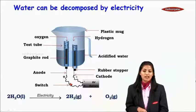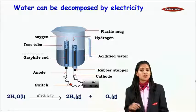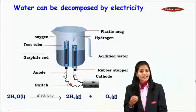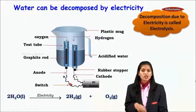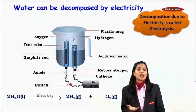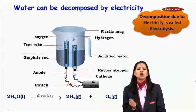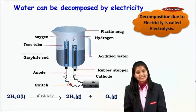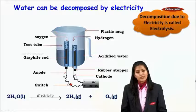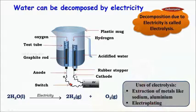The reaction needs to be balanced: 2H₂O → 2H₂ + O₂. Such a decomposition reaction that takes place due to electricity is called electrolysis, also called electrolytic decomposition. Uses of electrolysis include the extraction of metals like sodium or aluminium, and also for the process of electroplating.